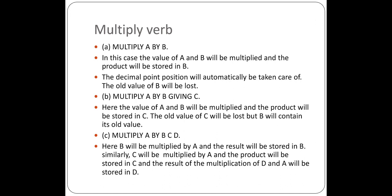Examples of the MULTIPLY verb: First, MULTIPLY A BY B — the value of A is multiplied by B and the result is stored in B. Second, MULTIPLY A BY B GIVING C — A and B are multiplied and the result is stored in C. Third, MULTIPLY A BY B, C, D — A×B is stored in B, A×C is stored in C, and A×D is stored in D.